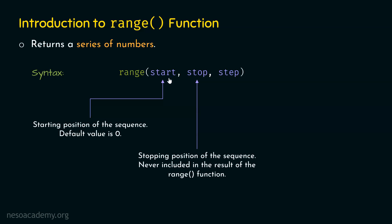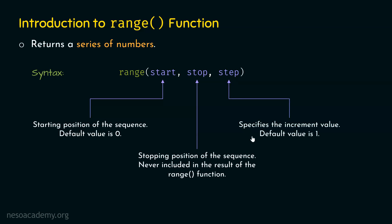Note that the stop value is never included in the result of the range function. For example, if start is zero and stop is five, we will get the sequence zero, one, two, three, and four — we will never get five. Stop is the mandatory argument; it is not optional, which is why there is no default value for it.